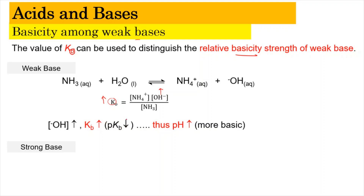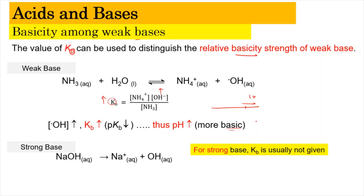The higher the pH, nearing 14, means it is a more basic species. Similarly, for the strong base, it's going to have no Kb value because it has 100% dissociation and does not have any reversible arrow.